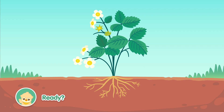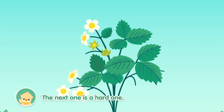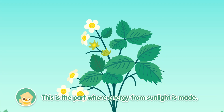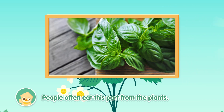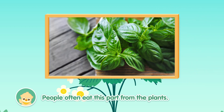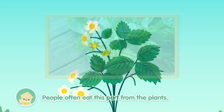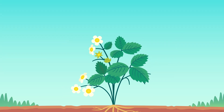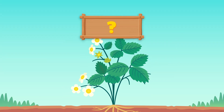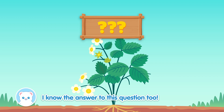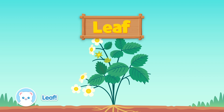Ready? The next one is a hard one. This is the part where energy from sunlight is made. People often eat this part from the plants. I know the answer to this question, too. Leaf! You got it right again.